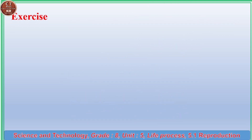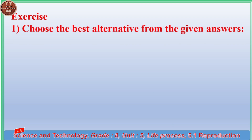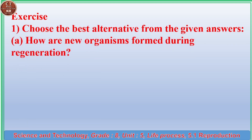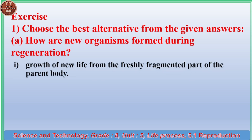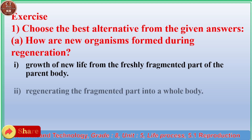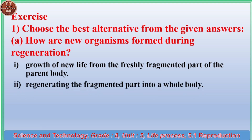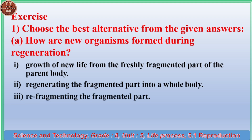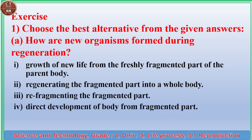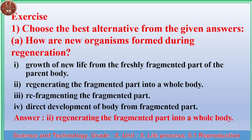Exercise 1: Choose the best alternative. (a) How are new organisms formed during regeneration? (1) Growth of new life from the freshly fragmented part of the parent body. (2) Regenerating the fragmented part into a whole body. (3) Re-fragmenting the fragmented part for direct development. Answer: (2) Regenerating the fragmented part into a whole body.